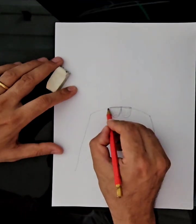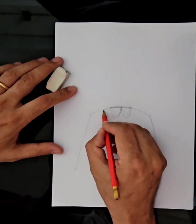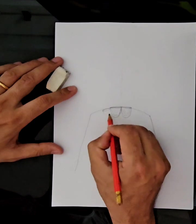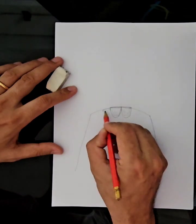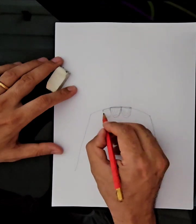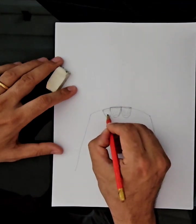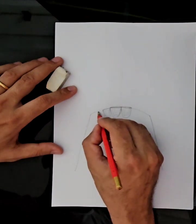Then lateral incisor, of course, you want it to be a little more inside. So a little in, smaller tooth. And, of course, canine.